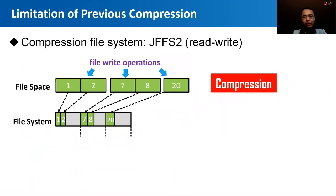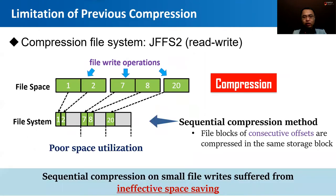Sequential compression is commonly employed by previous compression file systems, such as JFFS2. File blocks with consecutive offsets can be compressed in the same storage block. For example, assume three file write operations with discontinuous file offsets arrive at the operating system. With sequential compression, a new storage block will be allocated if a compressed file block does not continue the file offset with the previous one. As a result, although sequential compression has a low data mapping cost, much space has no choice but to be wasted in the physical blocks.